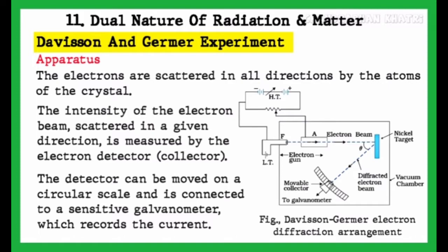The electrons are scattered in all directions by the atoms of the crystal. The intensity of the electron beam scattered in a given direction is measured by the electron detector, also known as collector.